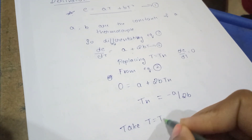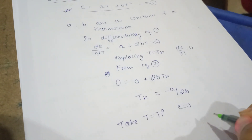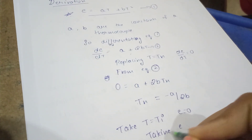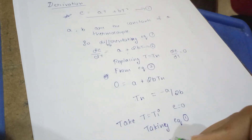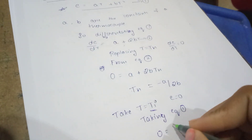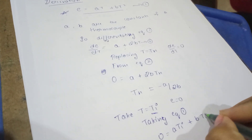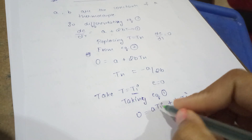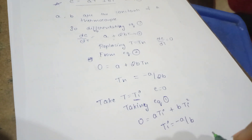Further, from equation one, take T = T-i and E = 0. Substituting into equation one: 0 = aT-i + bT-i². Taking T-i as common, we get T-i = −a / b.